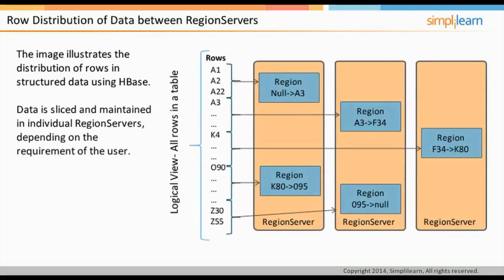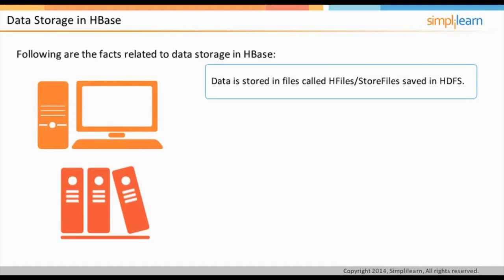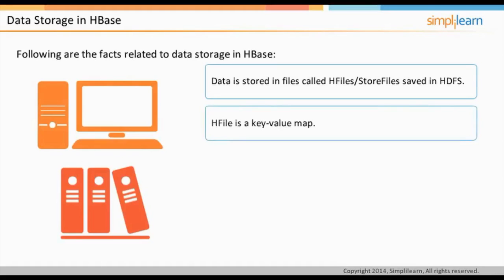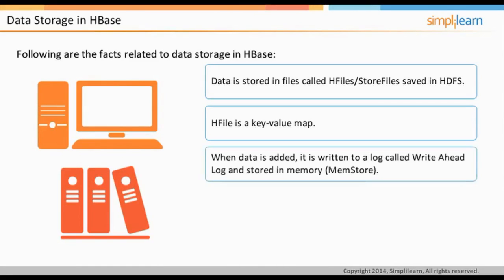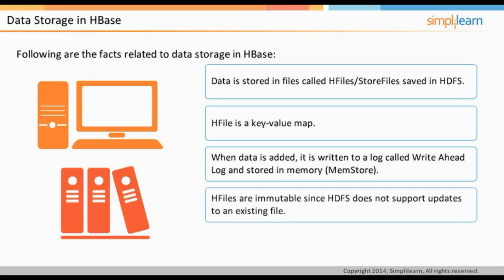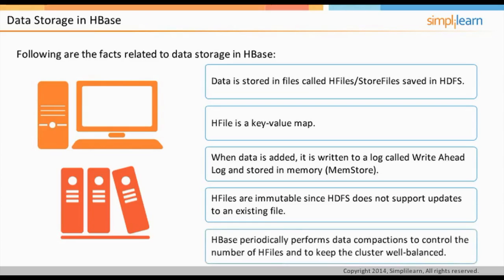Data is distributed across individual region servers, ensuring availability of data to a specific user. Data is stored in files called HFiles or store files that are usually saved in HDFS. HFile is a key-value map generated by MapReduce operations. When data is added, it is written to a Write-Ahead Log and stored in memory as MemStore. HFiles are immutable since HDFS does not support updates to existing files. To control the number of HFiles and keep the cluster balanced, HBase periodically performs data compactions.